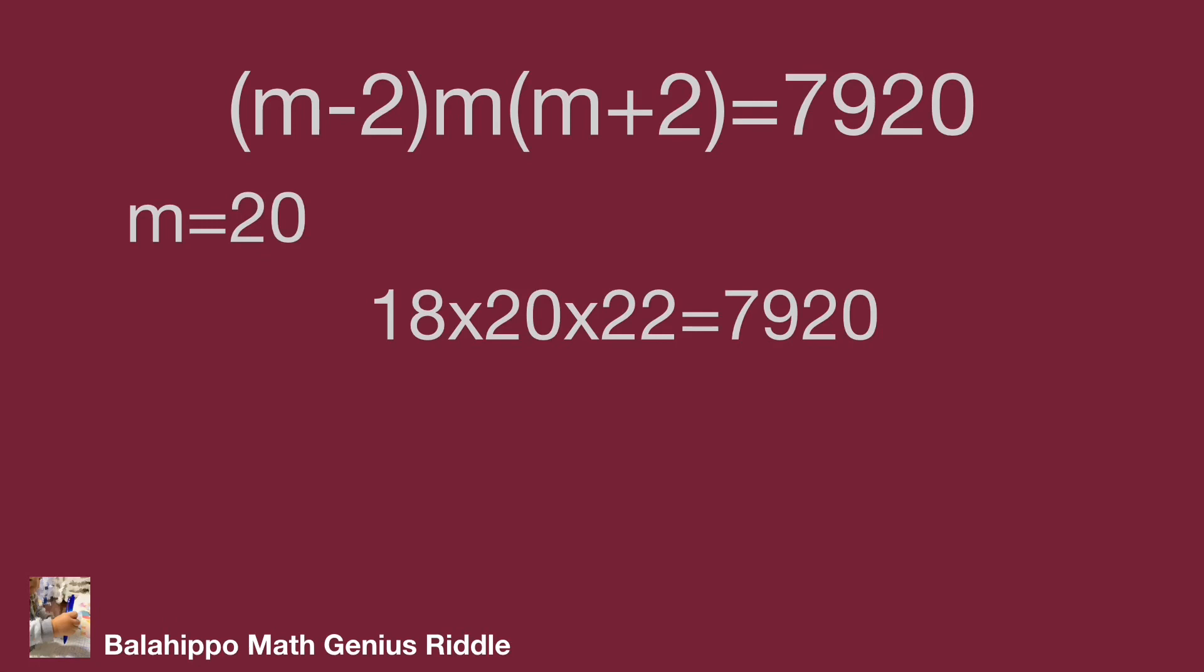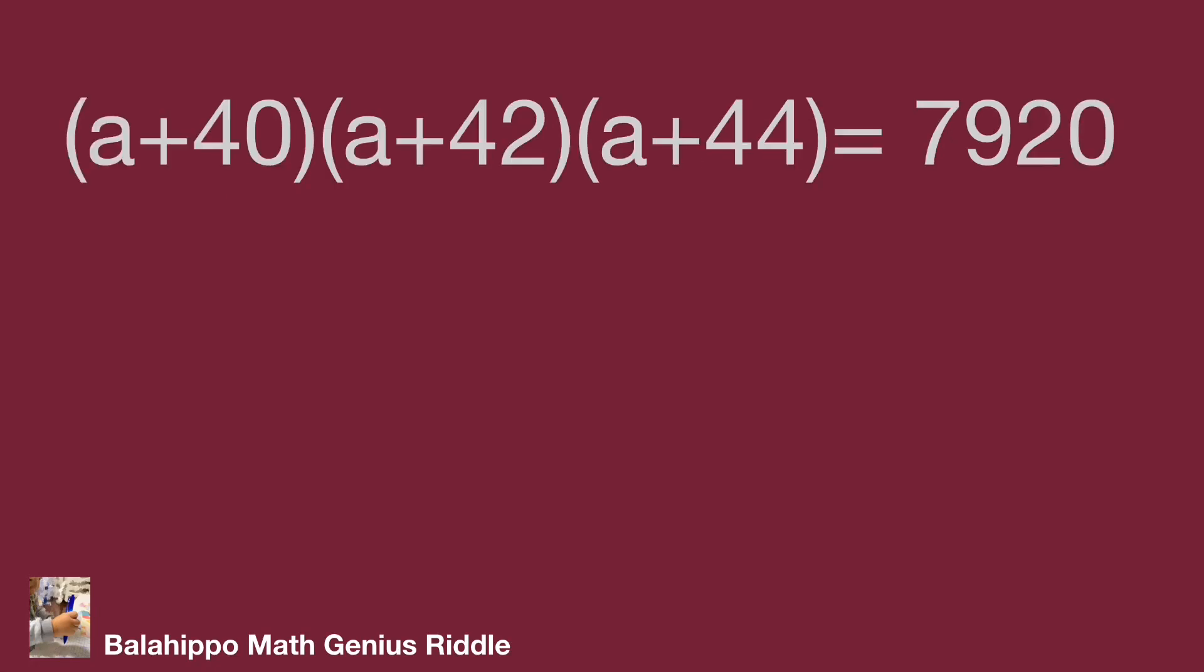M is 20. That's the right value. A plus 42 equal to m and m equal to 20. Substitute m by 20 into a plus 42 equal to m. A equal to minus 22. That's the answer.